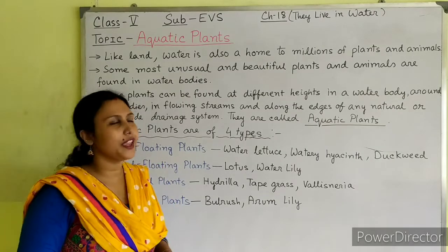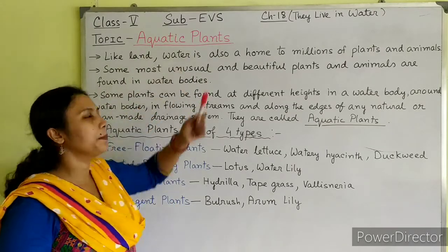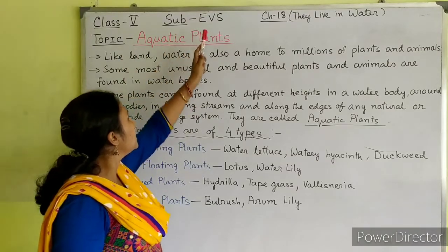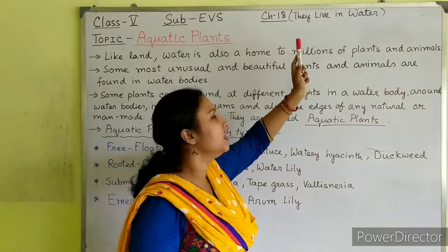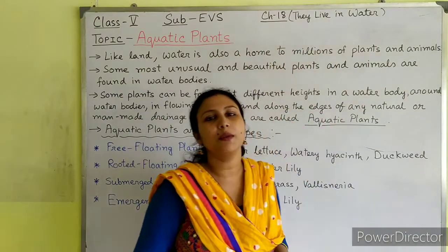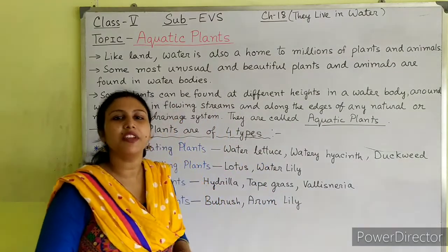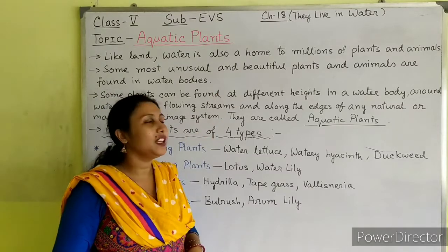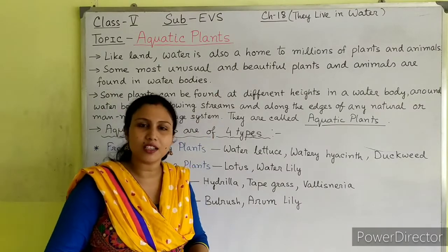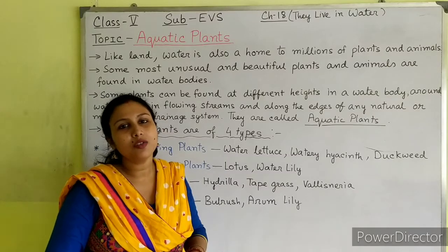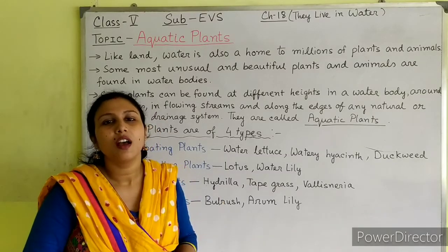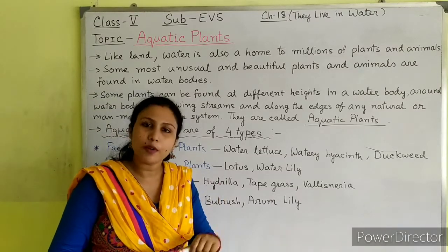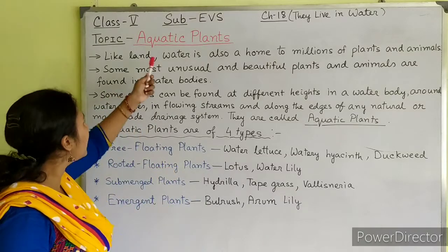Our today's topic is aquatic plants, which is under Class 5 subject EBS, Chapter number 18. The name of the chapter is 'They Live in Water.' From the name of the chapter, you can understand that we will learn about different plants and animals living in water. Our today's topic is aquatic plants.